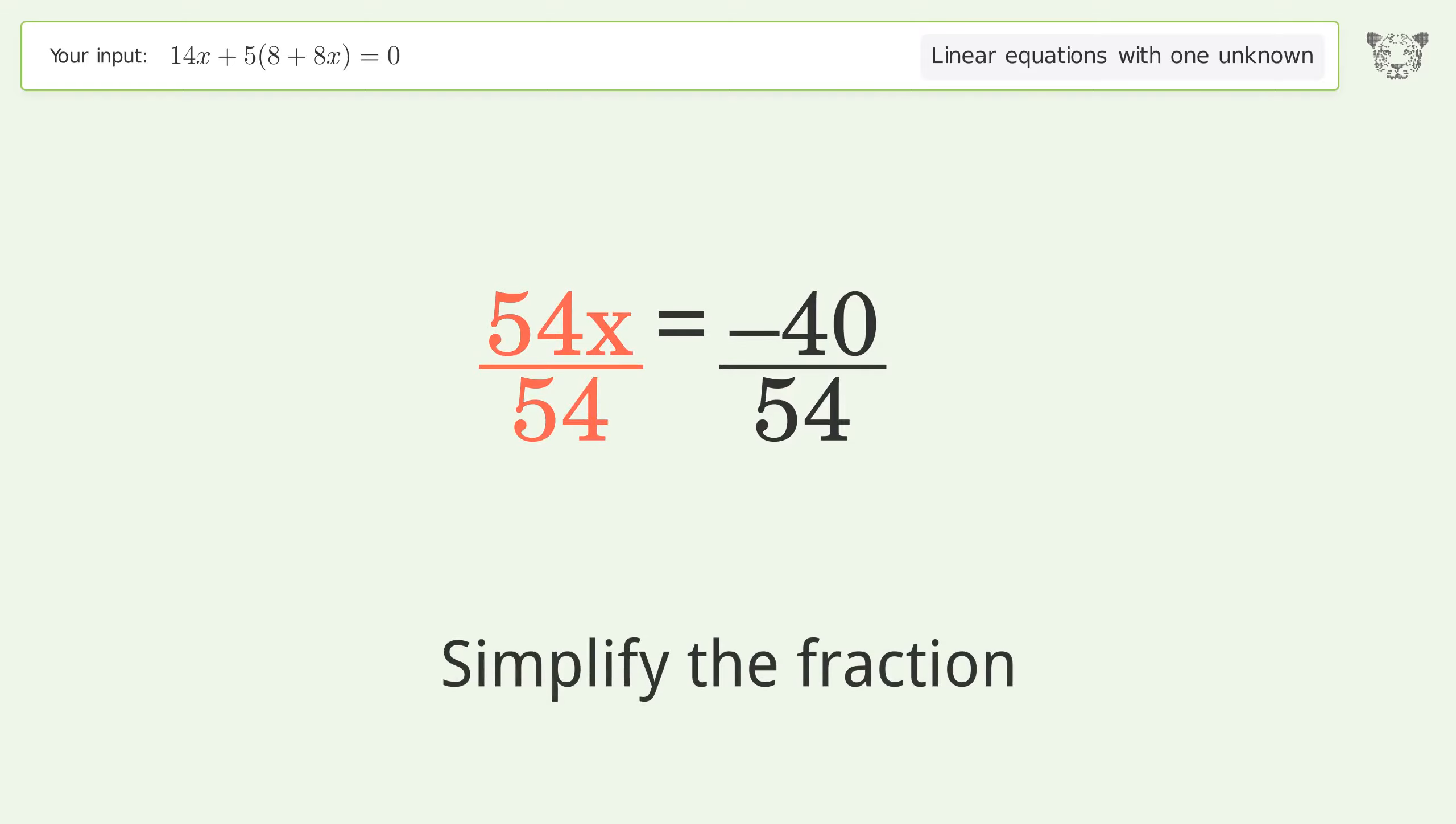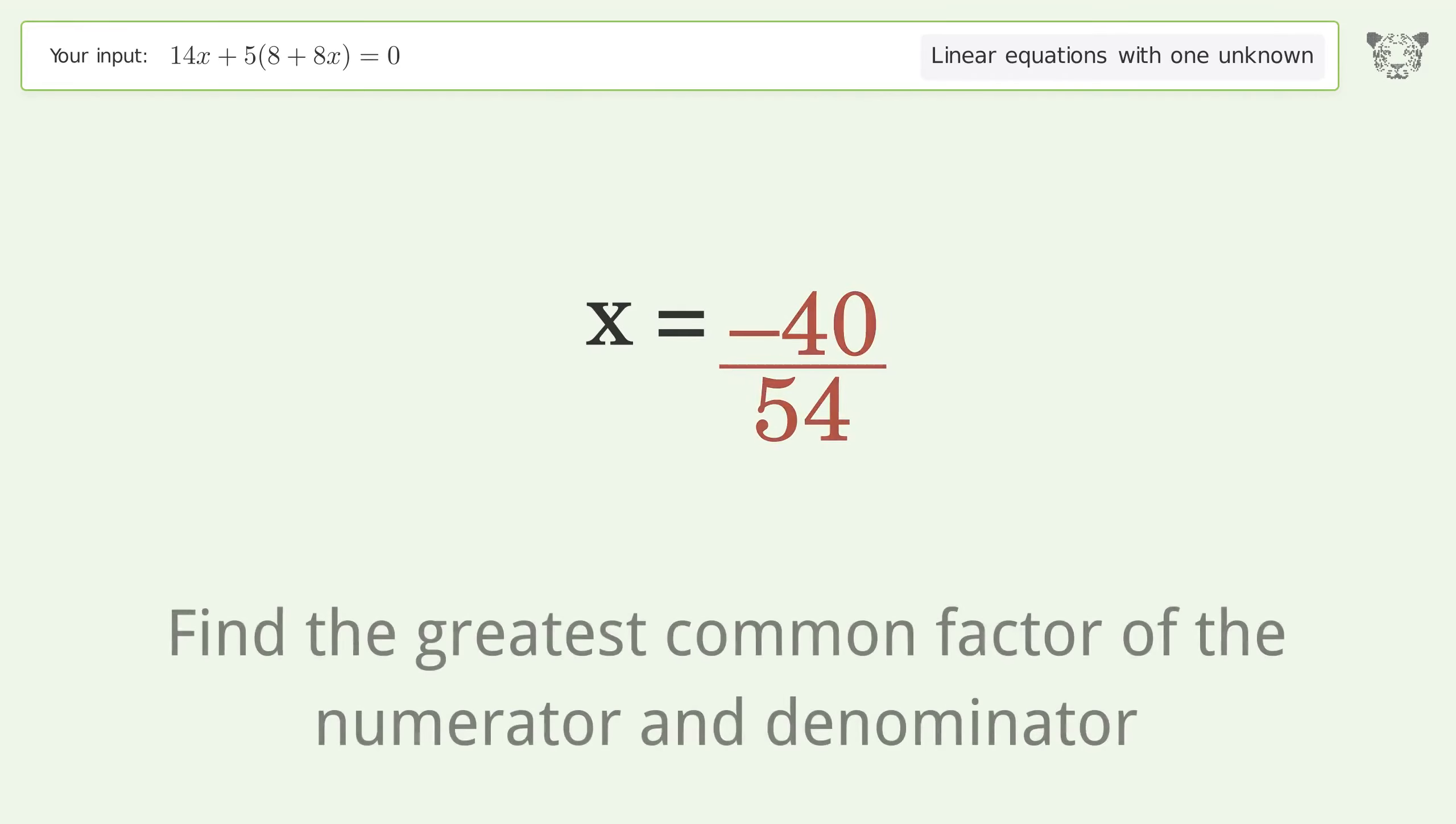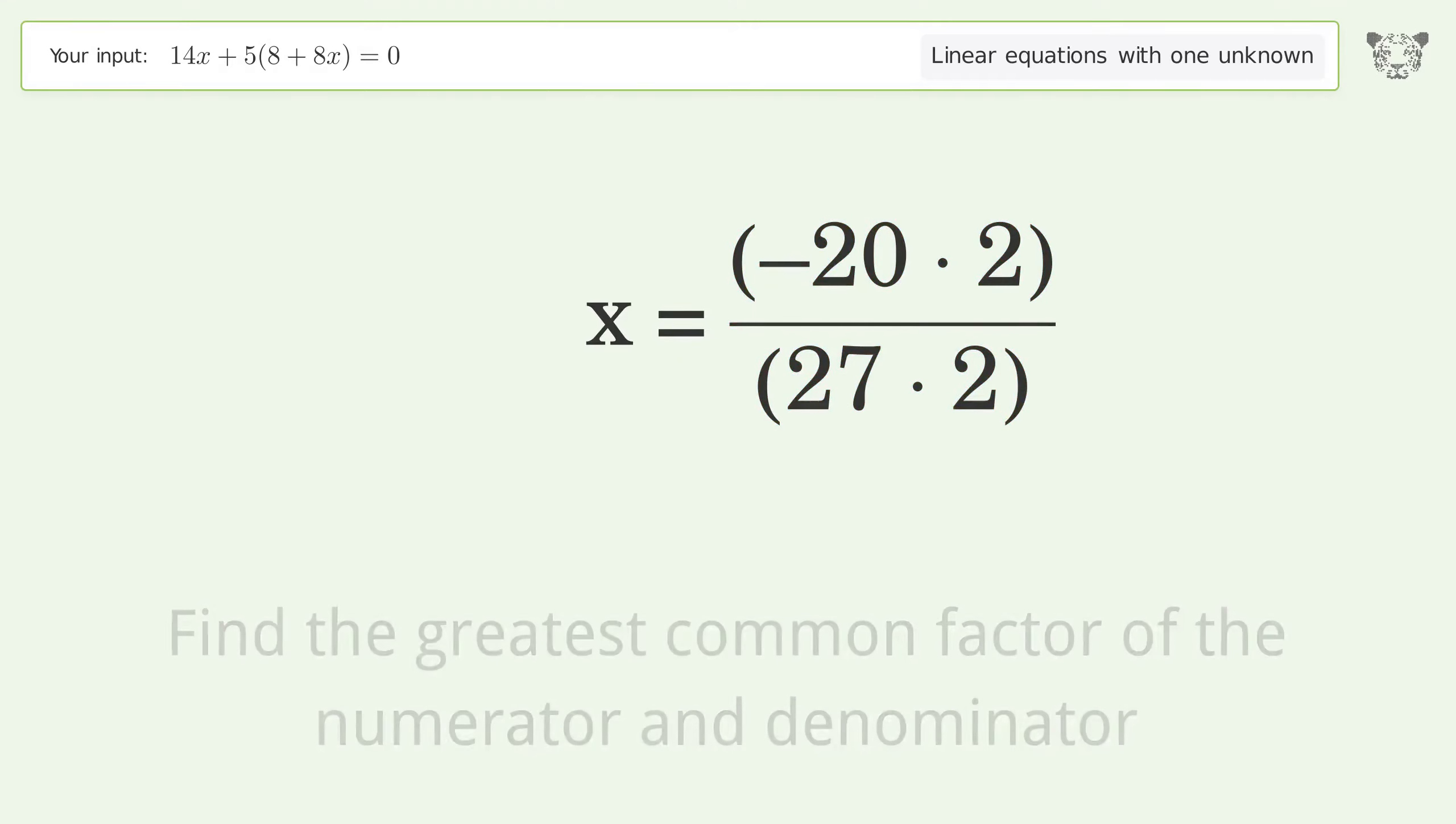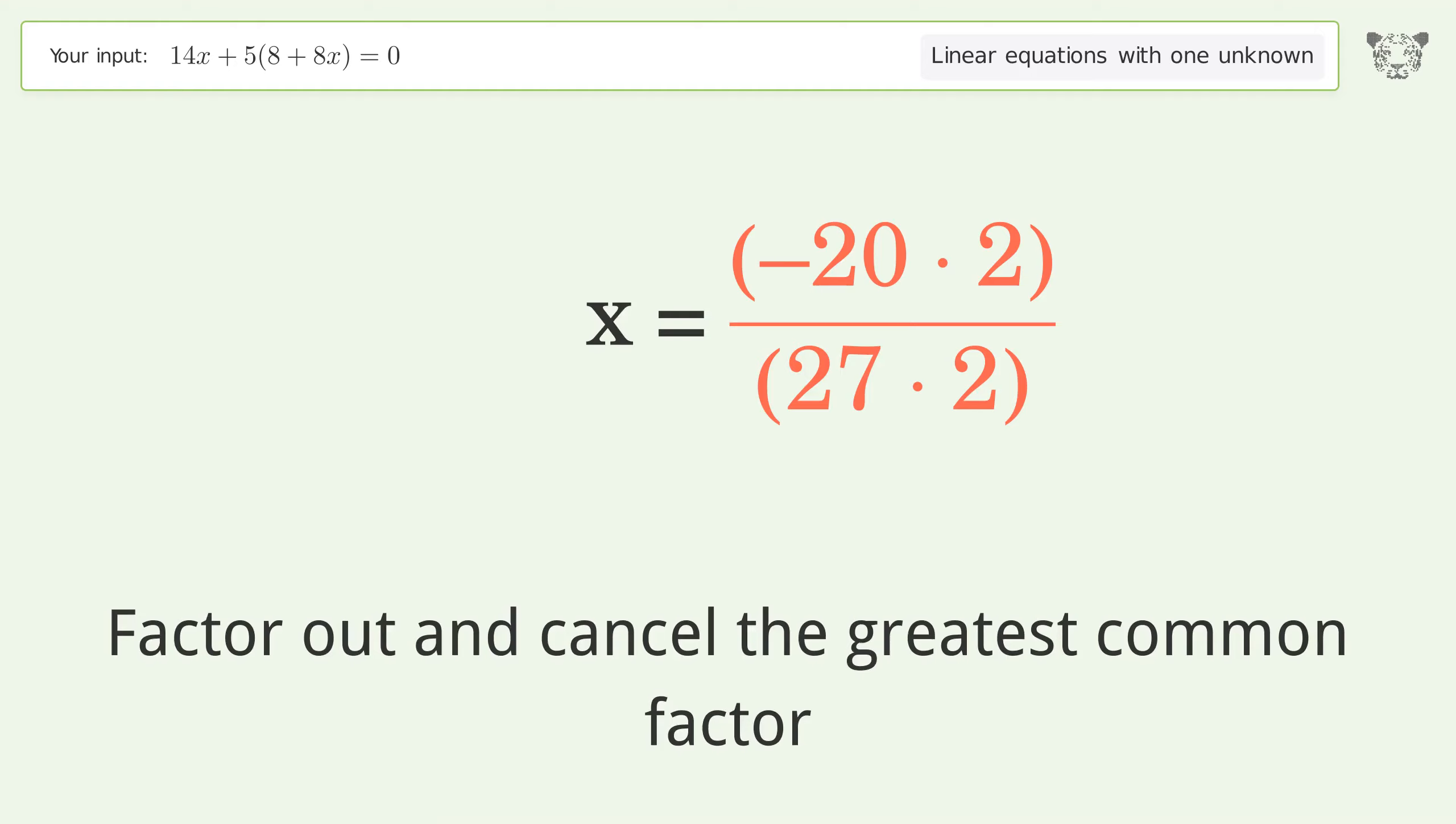Simplify the fraction. Find the greatest common factor of the numerator and denominator. Factor out and cancel the greatest common factor.